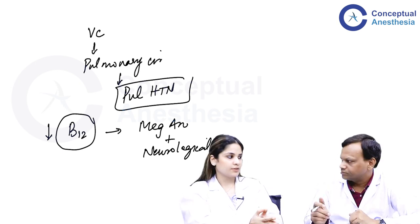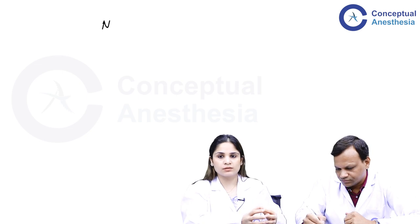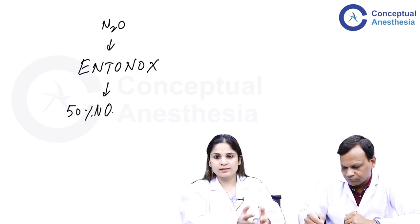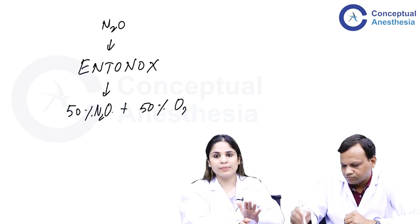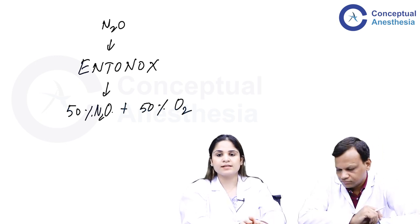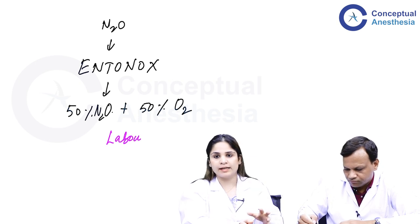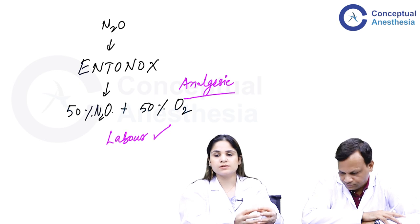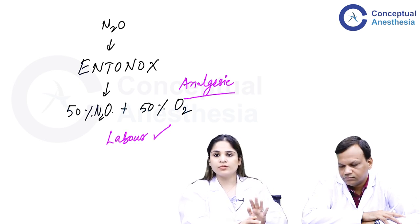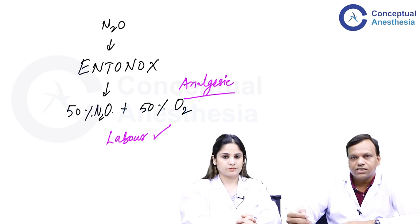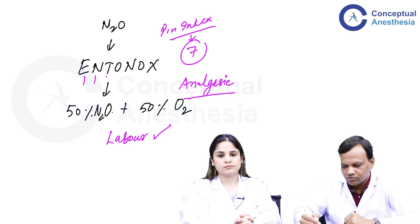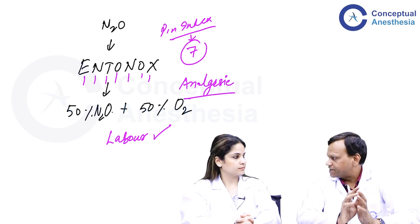Nitrous oxide is also used as entonox — a mixture of 50% oxygen and 50% nitrous oxide. Since 50% nitrous oxide does not anesthetize the patient, only pain relief and mild sedation are achieved. It is useful in labor: when a mother has significant pain during childbirth, we give entonox through a tight-fitting mask, providing pain relief without making her unconscious — preventing aspiration. The pin index of entonox is 7 (it has 7 letters: E-N-T-O-N-O-X).